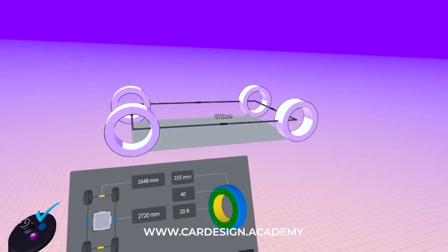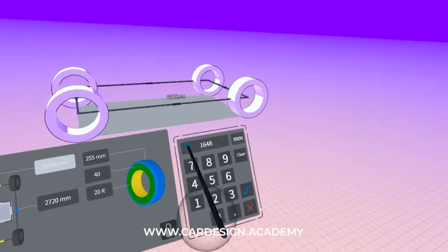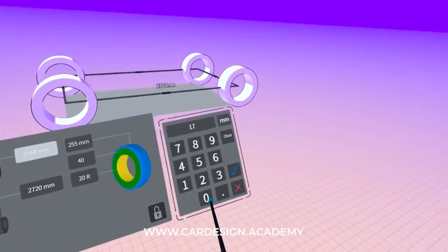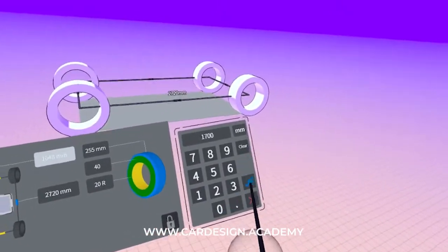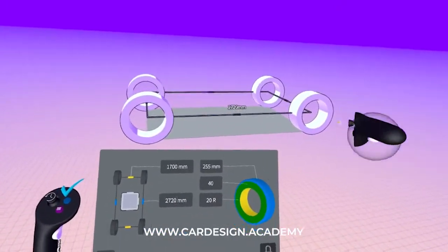You can see I can change the tire diameter. I'm going to change the overall width to 1,700. And then you can see the dimensions updating in real time.